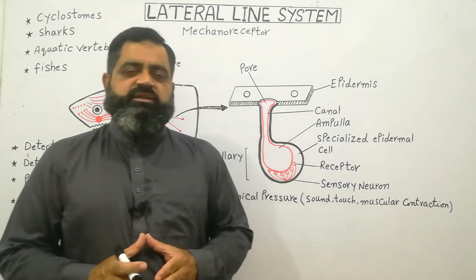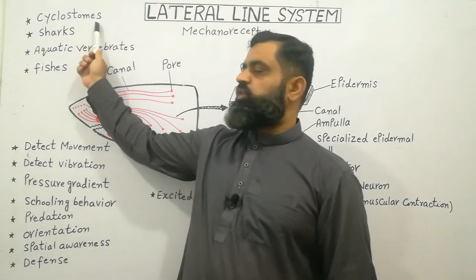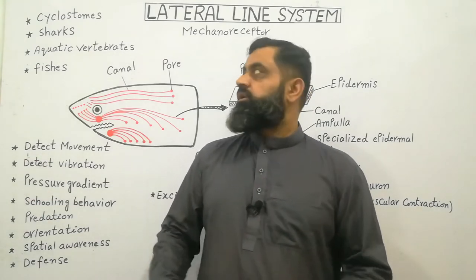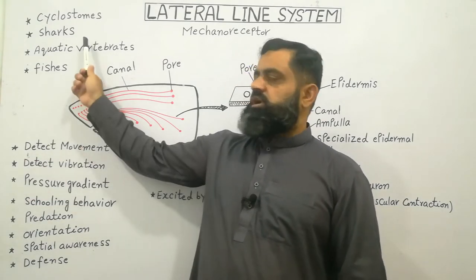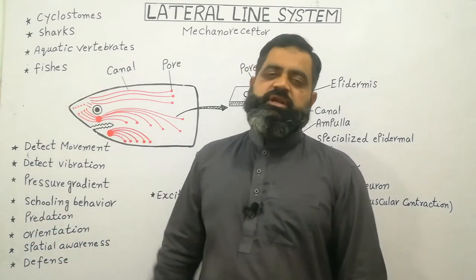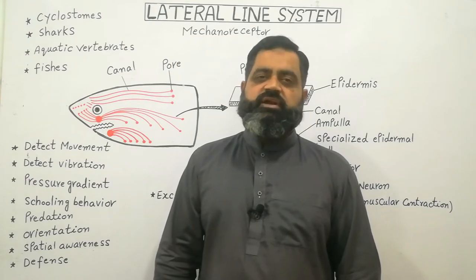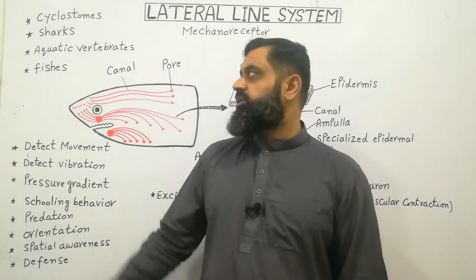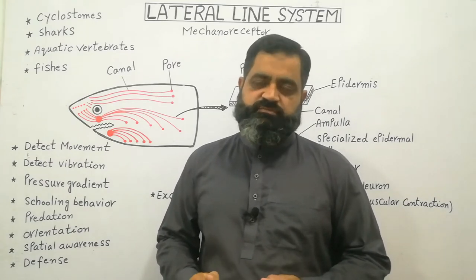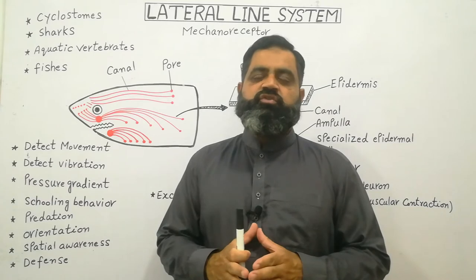Which aquatic vertebrates have the lateral line system? It is present in cyclostomes, which is a group of fish. Sharks also have the lateral line system, as do aquatic vertebrates like fishes and amphibians, and some other fish as well.